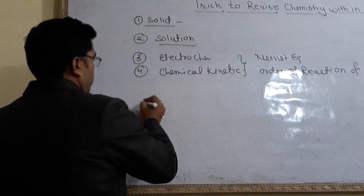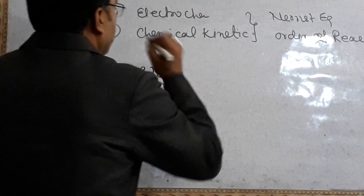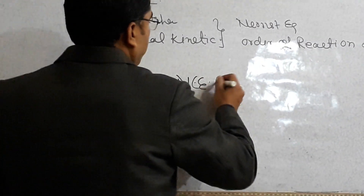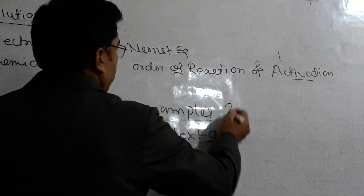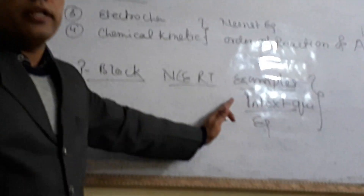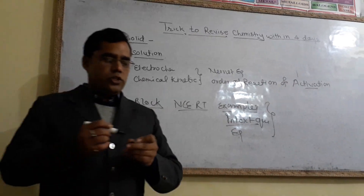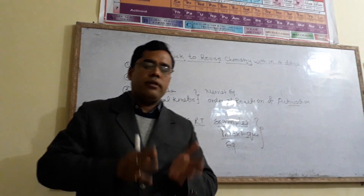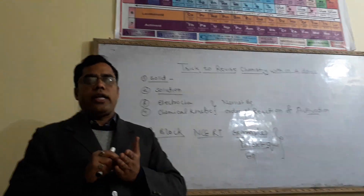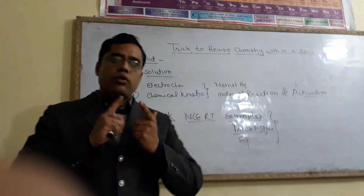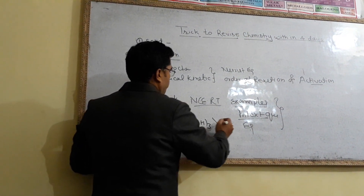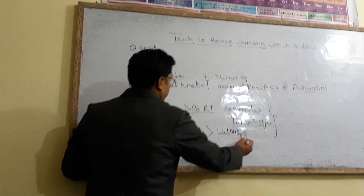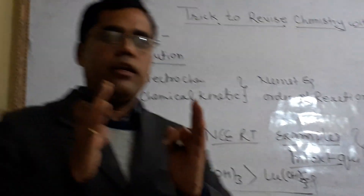From P-block elements, students, you can learn from NCERT examples, in-text questions, and exercise questions — this is sufficient material for the board examination. From D and F-block, you can learn the preparation of K₂Cr₂O₇ and KMnO₄. From F-block elements, learn lanthanoid contraction and questions based on lanthanoid contraction, like why La(OH)₃ is more basic than Lu(OH)₃, which is a consequence of lanthanoid contraction.